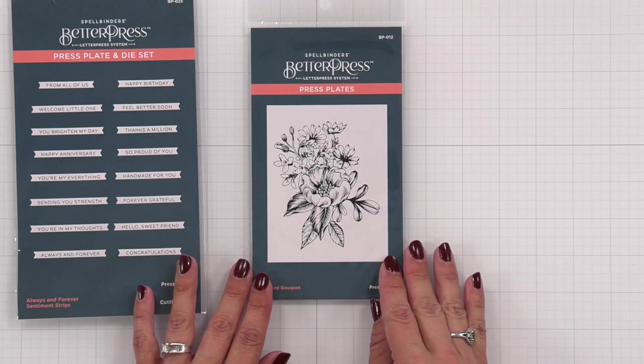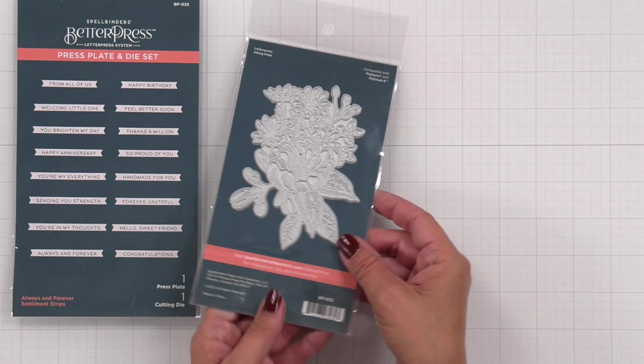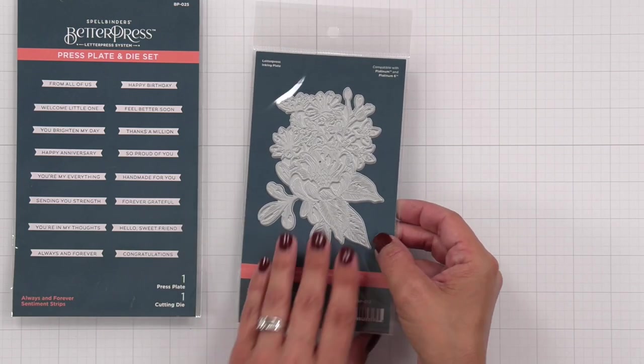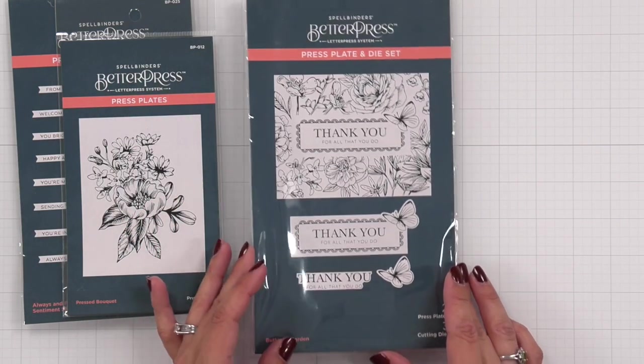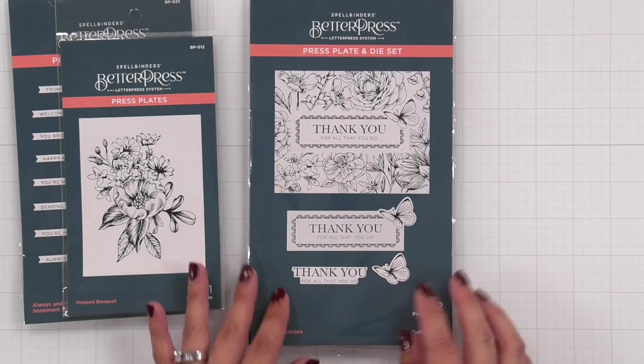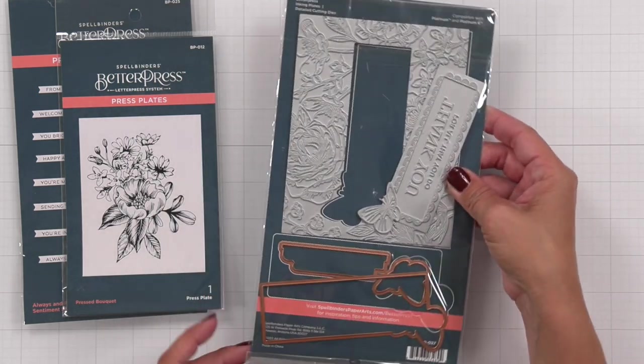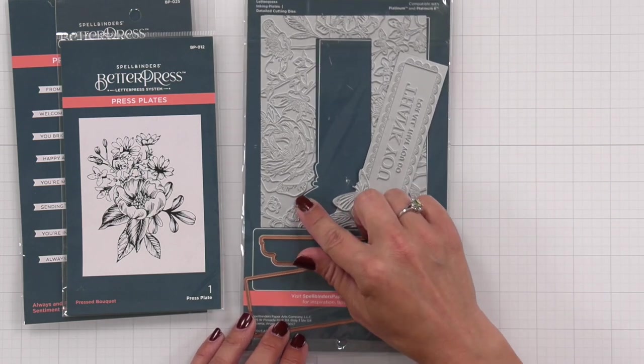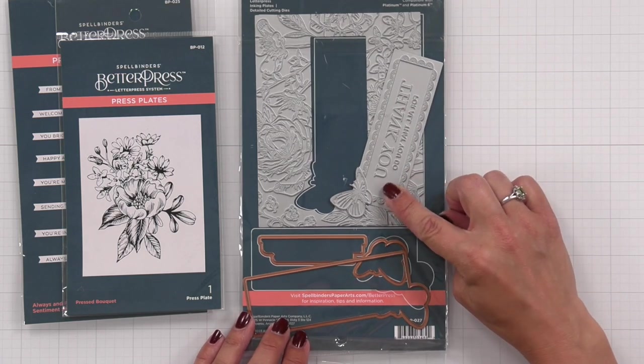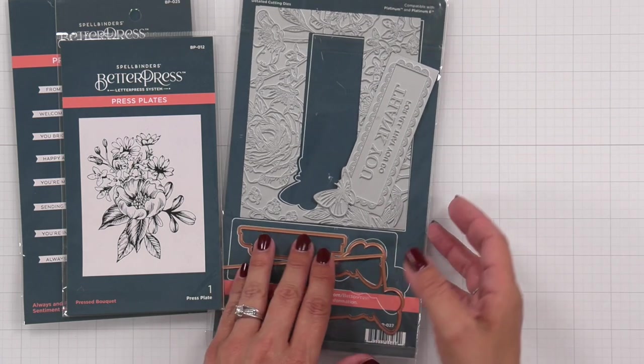Another new product that I will be using today is the Pressed Bouquet. Gorgeous floral arrangement. No coordinating die, but this one is going to look beautiful as a centerpiece on the front of the card. Then we have the Butterfly Garden. So this one actually has three pieces to it. You can do all of them at once or you can create the floral border around it. You can do the sentiment or you can die cut out the butterfly and that sentiment separately. So there are a few coordinating dies that go with this set.